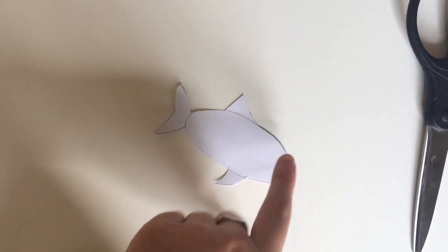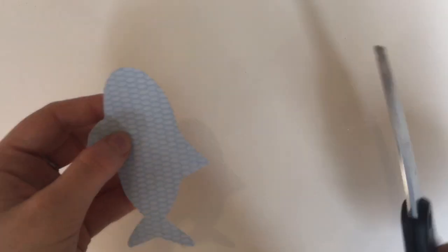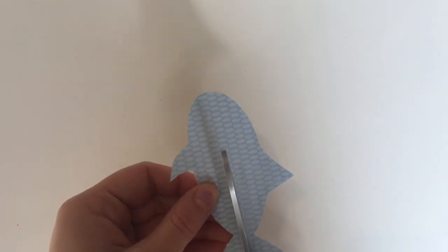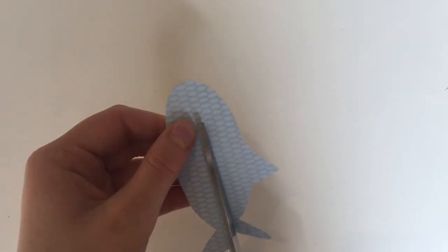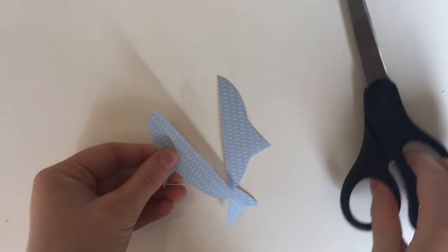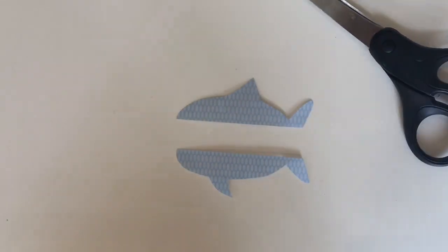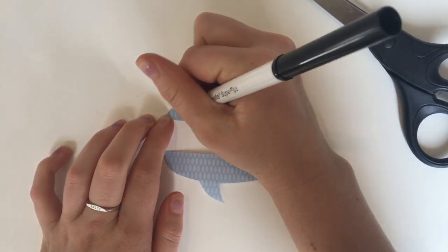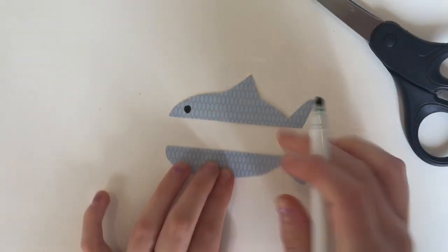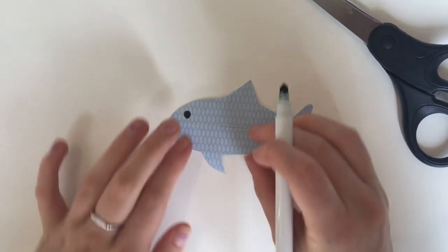Now cut out the outline of your shark and then cut it in half. You can also add an eye for your shark and some gills right in the middle of his body.